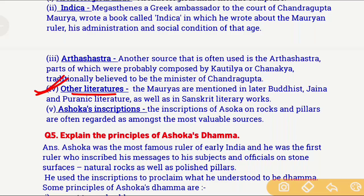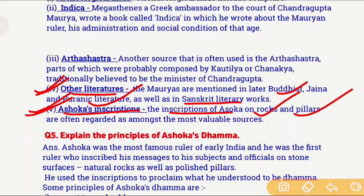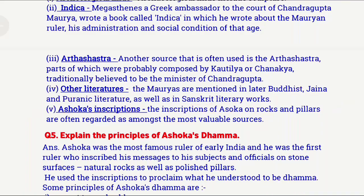Apart from Arthashastra, there are several other literary sources such as later Buddhist, Jaina, Puranic literature as well as Sanskrit literature, all of which provide information about the Mauryan Empire. The fifth very important source is Ashoka's inscriptions found on rocks and pillars, which are a very valuable source to know about the Mauryan Empire. These five important sources are used by historians to find out the history of the Mauryan Empire.